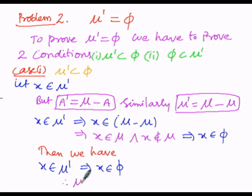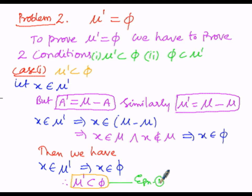Therefore we can write it as μ dash is the subset of φ. From this it is clear that we have proved the first condition, that is μ dash is a subset of φ. Let us consider this as Equation 1.